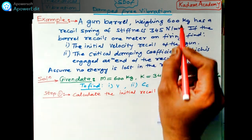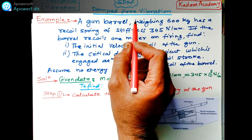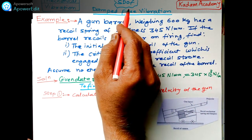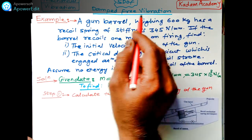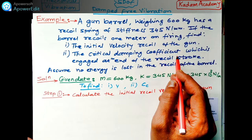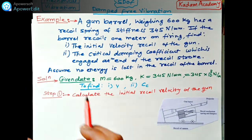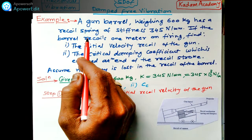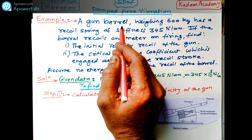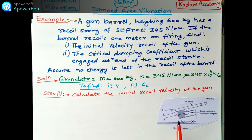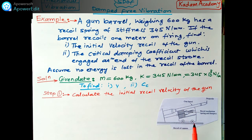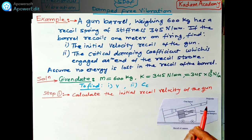Welcome to Kardam Academy. Under single degree of freedom damped free vibration, I am covering numericals on mechanical vibration. This numerical involves the gun barrel — I will read it. The gun barrel weighs 600 kg. This is the picture for the gun barrel and the recoil cannon.